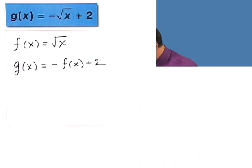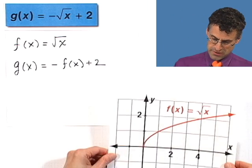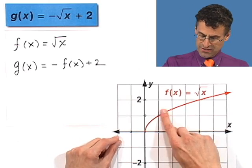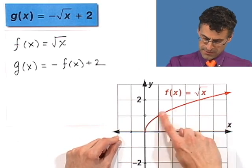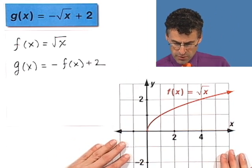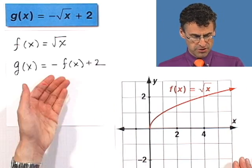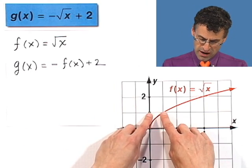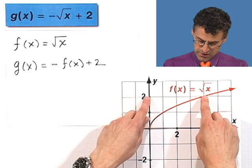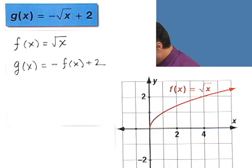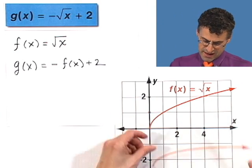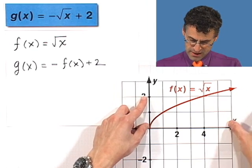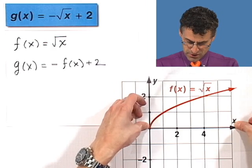So first we start off with the graph of f(x) equals the square root of x. And you know what that looks like? It looks like kind of half of a wing of a parabola on its side. And now what do I want to do? What I want to do is I want to look at the reflection over the x-axis. Take every y value and make it negative. So how would I see that? The way that I would see that is by just imagining I could move this thing. And now I just reflect it.